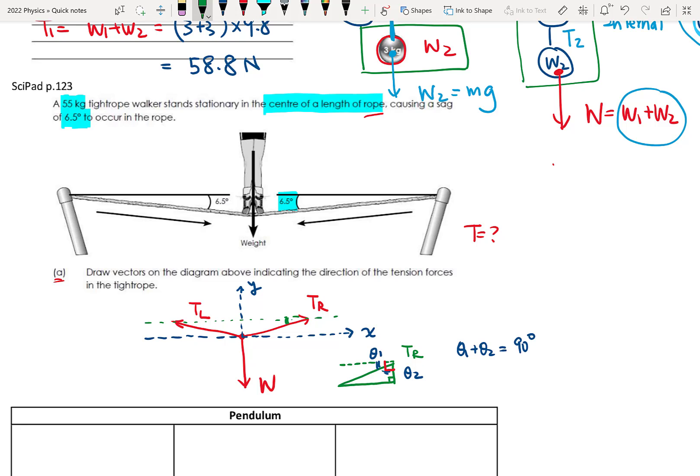So that means theta two and theta three will be 90 degrees. So theta two plus theta three will also equal to 90 degrees. And because the thetas are the same, so theta one is 90 degrees minus theta two. And theta three is also 90 degrees minus theta two. So they are the same value. That means this angle here is 6.5 degrees. And here will be 6.5 degrees as well.